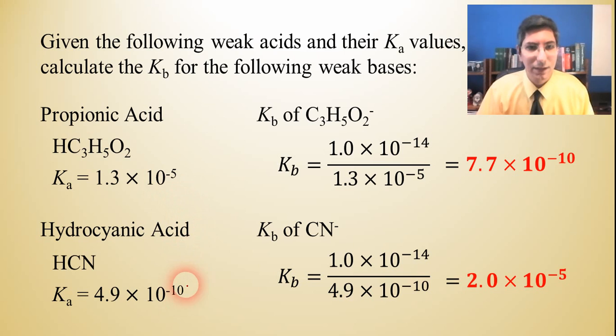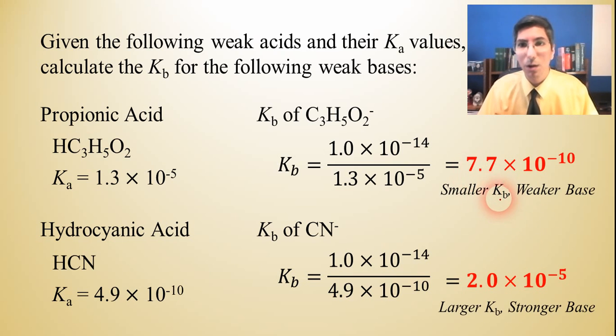So a couple things we can see here. Of these two acids, we can see that propionic was the stronger of the two acids, right? Because it has the larger Ka value. Well, the stronger acid is going to correlate to the weaker conjugate base. We can see that from the Kb value. And likewise, the weaker acid, hydrocyanic, corresponds to the stronger conjugate base. That makes sense. If you want to compare the two Kb values, we can see the same thing here. The smaller the Kb value in magnitude, the weaker that base is. And here we have a somewhat larger Kb value. It means we have a stronger base.